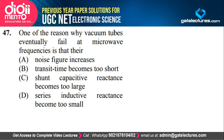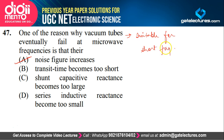One reason why vacuum tubes eventually fail at microwave frequency: their noise figure increases. Vacuum tubes are more suitable for short frequencies. Microwave frequencies are very high — in the range of gigahertz. The noise figure of vacuum tubes depends on frequency, so as frequency increases so much, the noise figure increases. If noise figure increases, it is not feasible to use these vacuum tubes. So they are suitable for short frequencies only. The correct answer is option B.